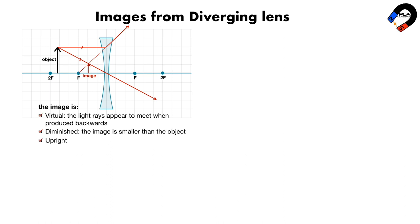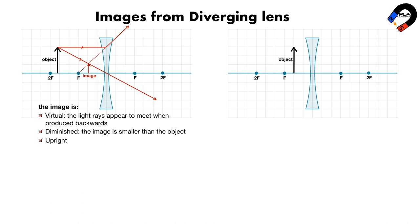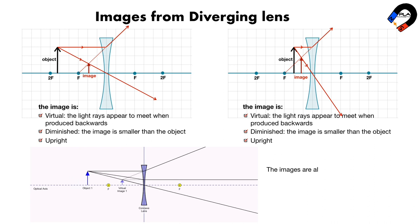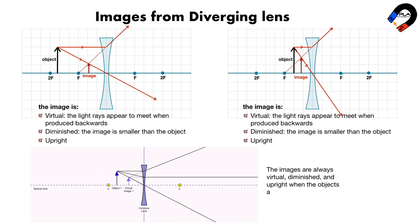If an object is placed between the lens and the focal length f, the diverging lens ray diagram is drawn the same way: a ray through the center continues straight, and a ray parallel to the axis diverges upward, with a dashed line back to focal point f. The image is found where the two rays appear to meet — it is virtual, diminished, and upright. We can see that the images from a diverging lens are always virtual, diminished, and upright regardless of the object's position.